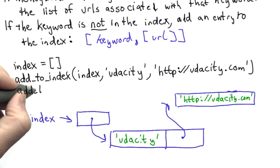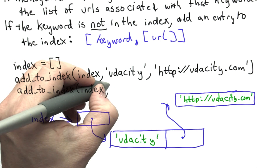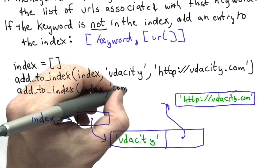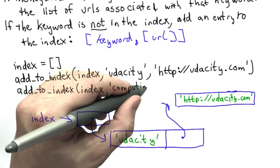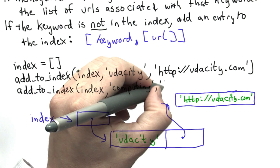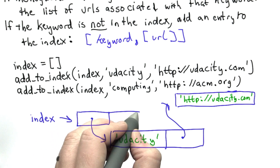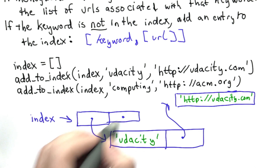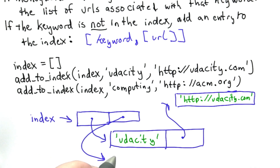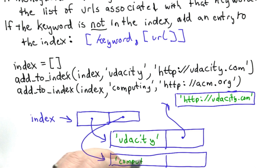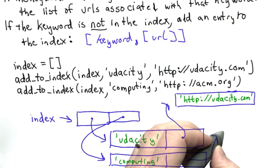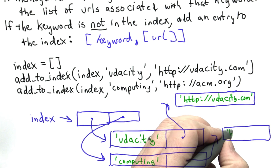If we call addToIndex again, this time passing in index again along with the keyword 'computing' and the URL 'acm.org', that's going to mutate index again. The keyword is not in the index, so we should add a new entry. We append a new entry to index with the keyword 'computing' and a list containing the URL 'acm.org'.